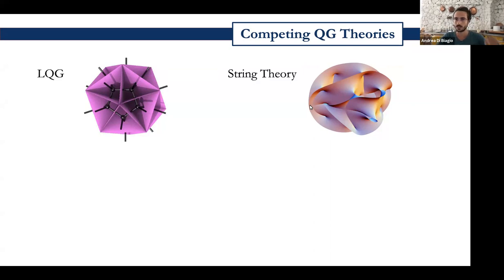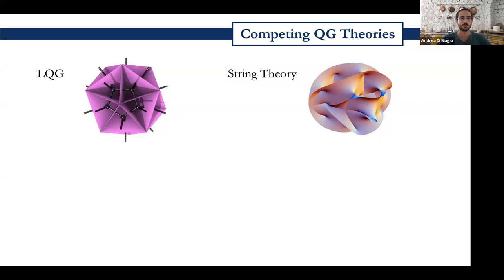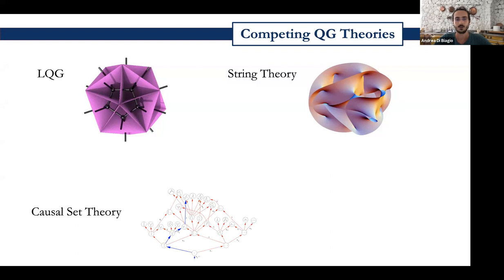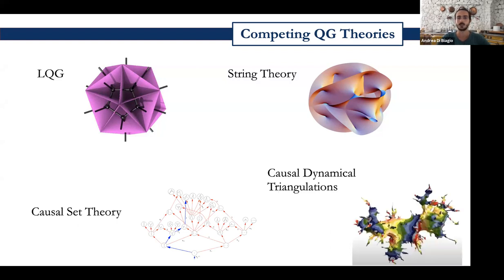In string theory, there is the famous landscape problem, where depending on how the extra dimensions are bundled together, you get different particles and different particle spectra. Whereas in loop quantum gravity, there is a quantization ambiguity represented by the Barbero-Immirzi parameter. We won't be able to choose between these two theories before doing experiments. Other theories have come up to respond to this incompleteness, such as causal set theory, where the main object is the causal structure of spacetime that is quantized, and similarly causal dynamical triangulations.